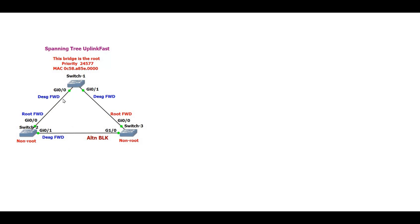Switch one has two interfaces, both in forwarding state because it is the root. Switch two, which is a non-root switch, has two ports: GigabitEthernet 0/0 is root forwarding and GigabitEthernet 0/1 is designated forwarding. Non-root switch three has two ports: GigabitEthernet 0/0 is root forwarding because it faces the root switch, and GigabitEthernet 1/0 is in an alternative blocked state. Switch three is using GigabitEthernet 0/0 to reach the root bridge.